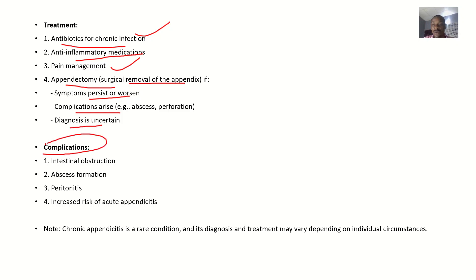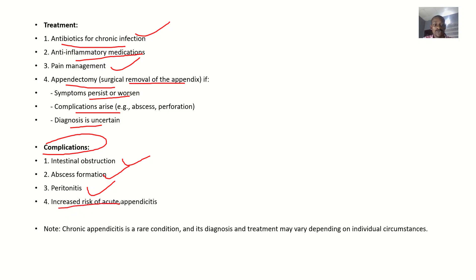What are the possible complications if chronic appendicitis is left untreated for too long? It could lead to intestinal obstruction, since the appendix is attached to the large intestine. It could lead to abscess formation and peritonitis — spread of infection to the peritoneal cavity. There is also an increased risk of acute appendicitis, where the chronic condition can flare up severely.